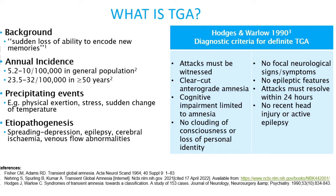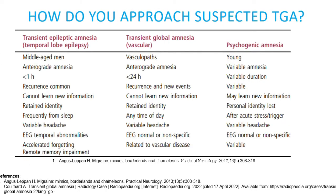The diagnosis of transient global amnesia is usually a clinical one, and therefore a lot of effort should be put into getting a reliable witness account of the event. If this is not possible, it may be difficult to make a diagnosis. A number of other conditions can present with acute memory impairment; the main differential diagnoses, considered in the table here, are transient epileptic amnesia, transient ischemic attack, and psychogenic amnesia.